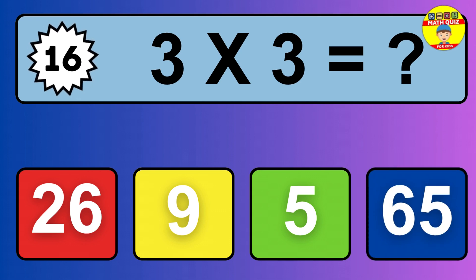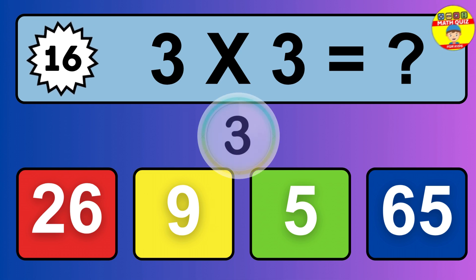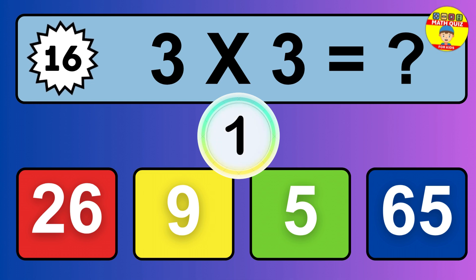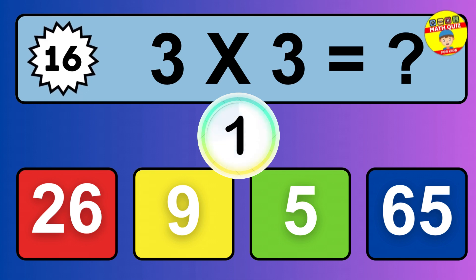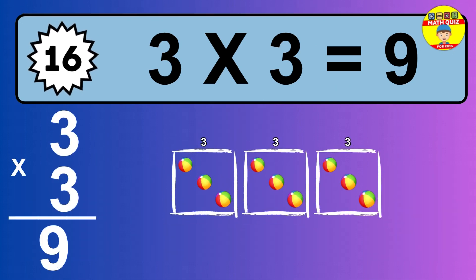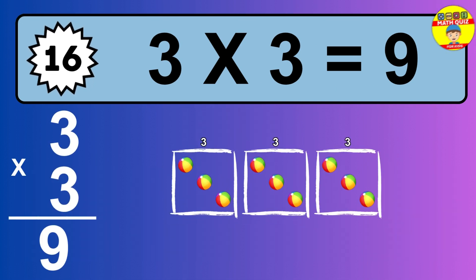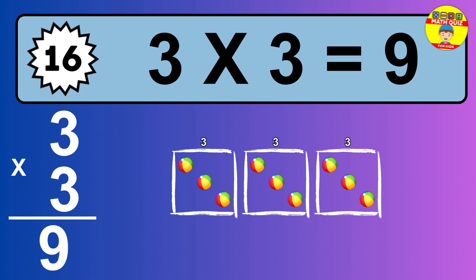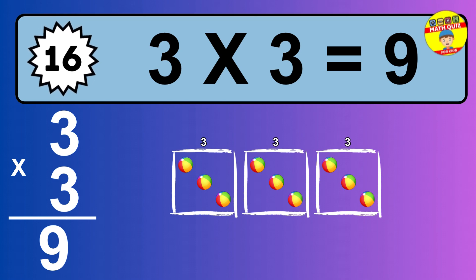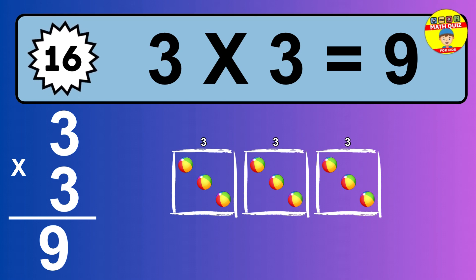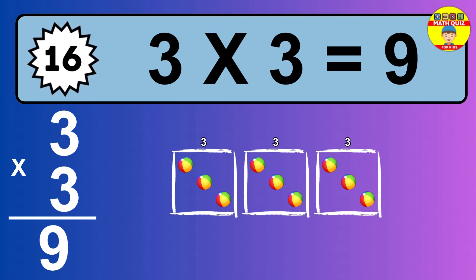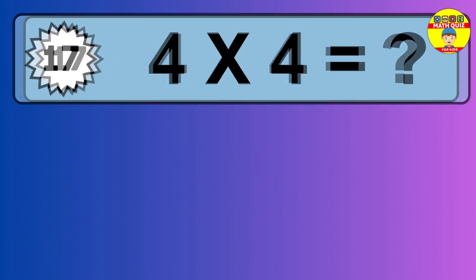Question 16. 3 times 3 equals what? The answer is 3 times 3 is 9. To calculate, we have 3 groups with 3 balls each one. So, how many balls do we have? 9 balls.